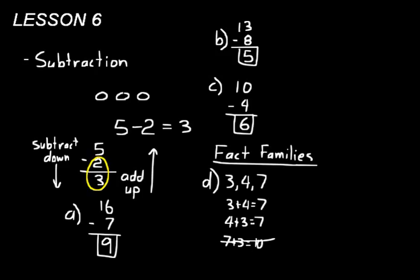Now let's do two subtraction facts. And so always what you do with the subtraction facts is you use the biggest number in there and then you subtract from that biggest number. So we'd say seven minus four equals three. There's one subtraction fact. Remember we can add up to check our work. Three plus four equals seven. That one works.